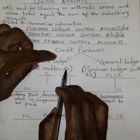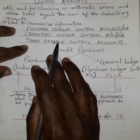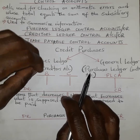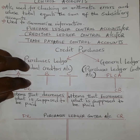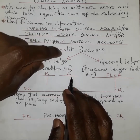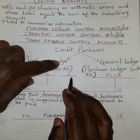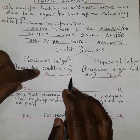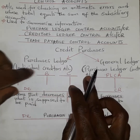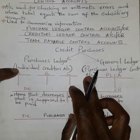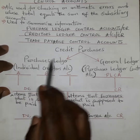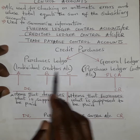The purchases ledger refers to the individual creditors' accounts. For example, if a business has 10 creditors, it must prepare an individual account for each and every creditor. Because creditors are liabilities and we use the double entry principle — when there is an increase in liability it is credited, but if there is a decrease we debit.